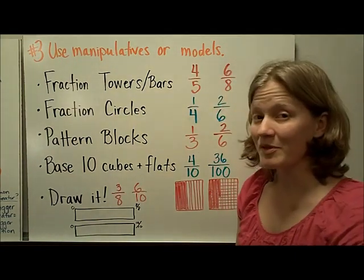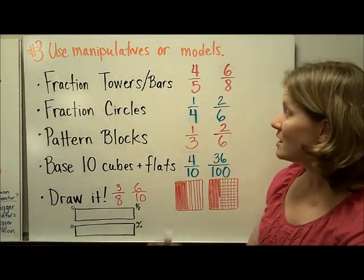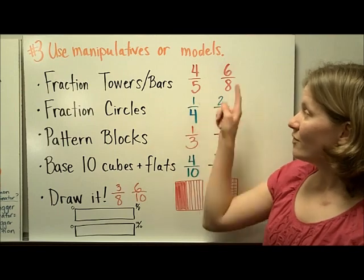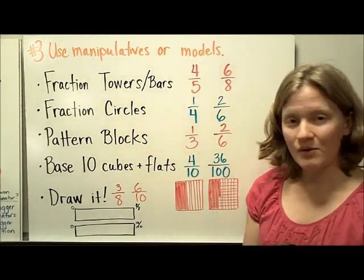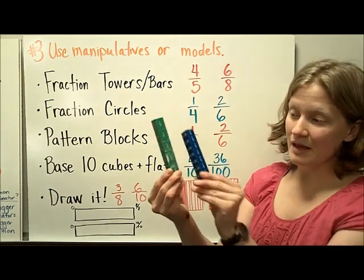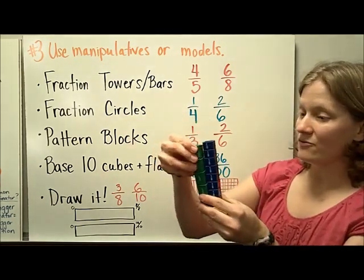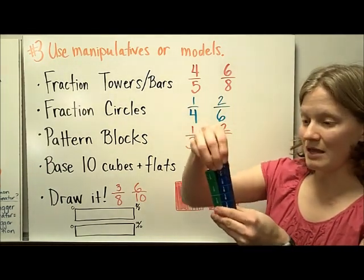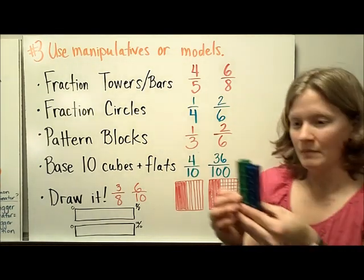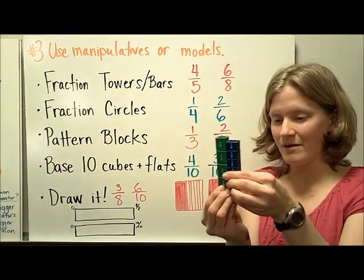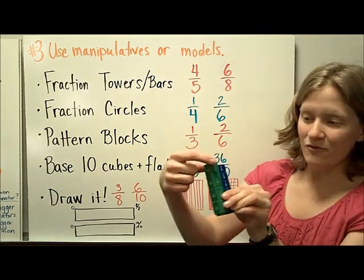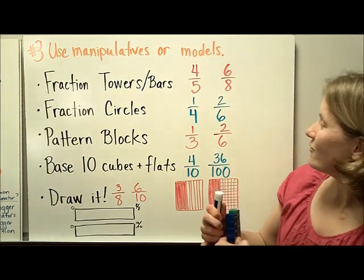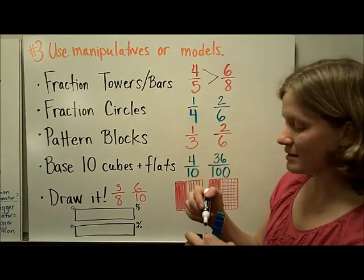Next, you can also use manipulatives or models in order to compare fractions. One manipulative that you can use are fraction towers or fraction bars. For four-fifths compared to six-eighths, I would get out from my fraction tower set the set of fifths and the tower broken up into eighths. I would take four of the fifths, then six of the eighths, and compare them. If I set them flat on my table, I would see that the four-fifths is a little bit taller than the six-eighths. So four-fifths is greater than six-eighths.